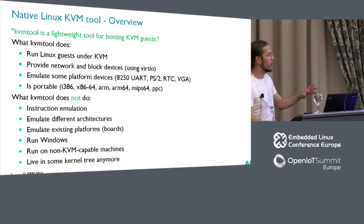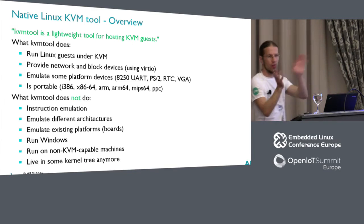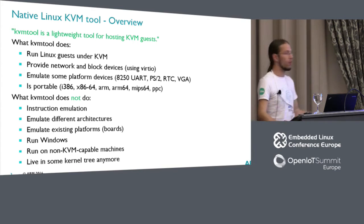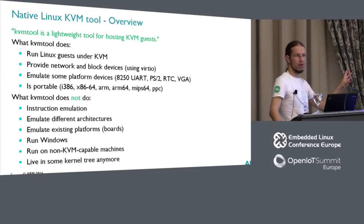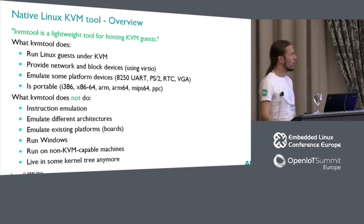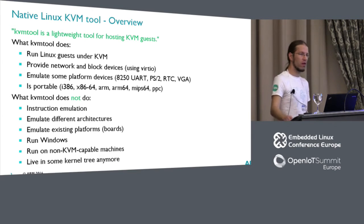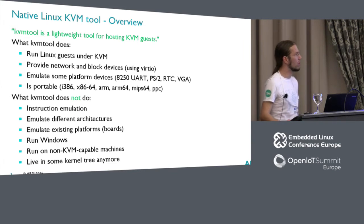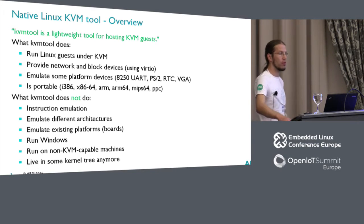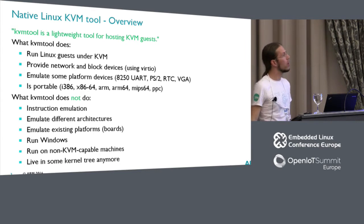You cannot say 'please emulate a Raspberry Pi for me' and get all the peripherals. It just does the bare minimum to get Linux loaded and make it happy. For ARM, it just uses the virt platform, and that's it — but that's probably sufficient. It cannot run Windows. Since KVM tool does not support ACPI, it just will not work. And it cannot run on non-KVM-capable machines — you have to have KVM support in your kernel and it has to work.